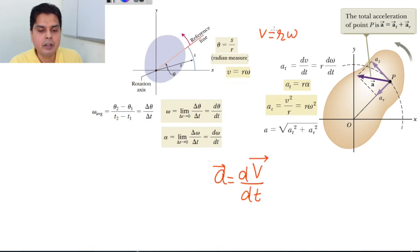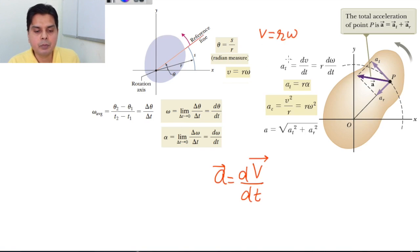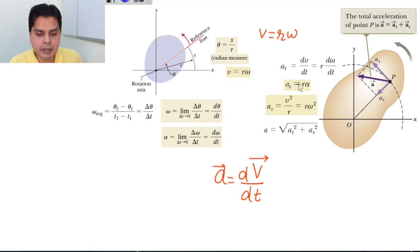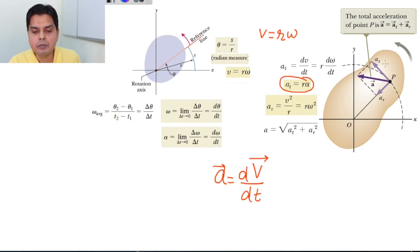When the magnitude of v changes — since v = rω — this happens when ω changes, i.e., when there is angular acceleration α. In that case, dv/dt = r(dω/dt), giving the tangential acceleration aₜ = rα.